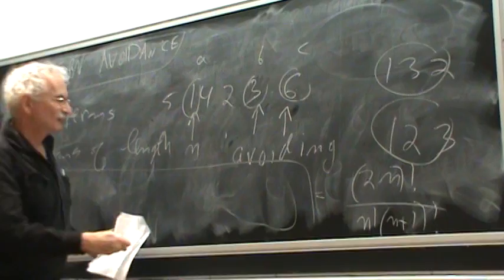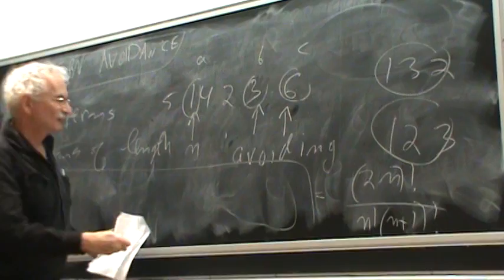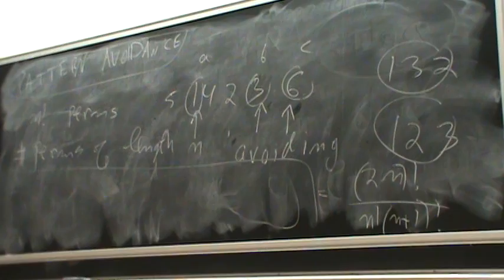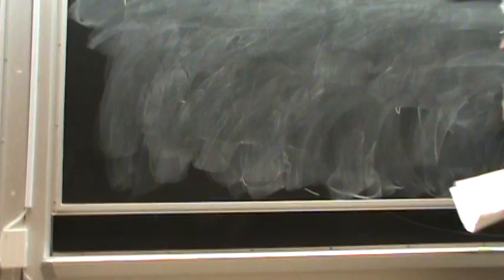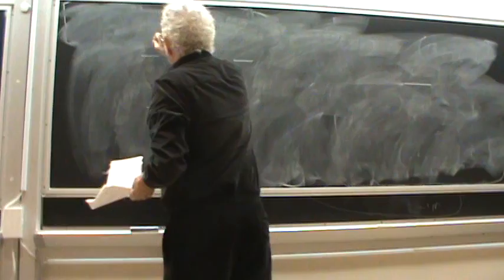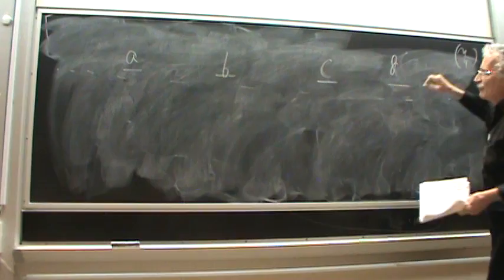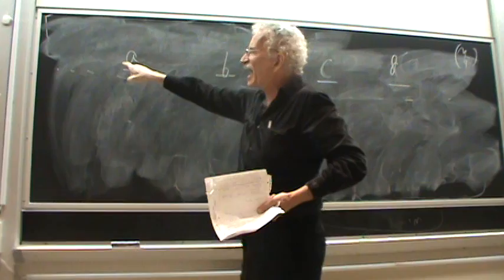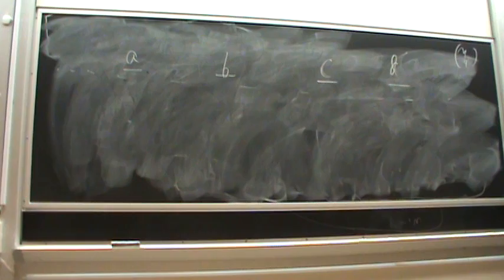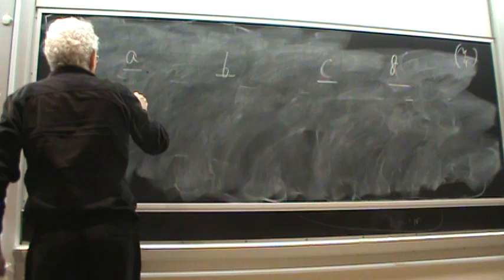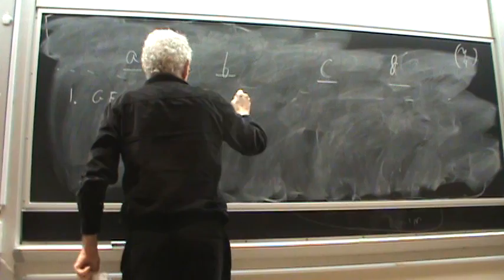But now, what about patterns of length four? The number of permutations of length n that avoid the pattern 1-2-3-4, or a-b-c-d. In other words, in how many ways can you arrange n people of n different heights so that you never have this pattern? If you look at all the n-choose-4 choices of taking positions a, b, c, and d, you never have the shortest guy being here, the second shortest here, the third, and the tallest. How many are they? This is much harder. And in 1998, semi-Stevenson, very smart, Sam Wilf, I'm a guesser, proved it. Finding a formula. A nice, not so nice, but a formula.